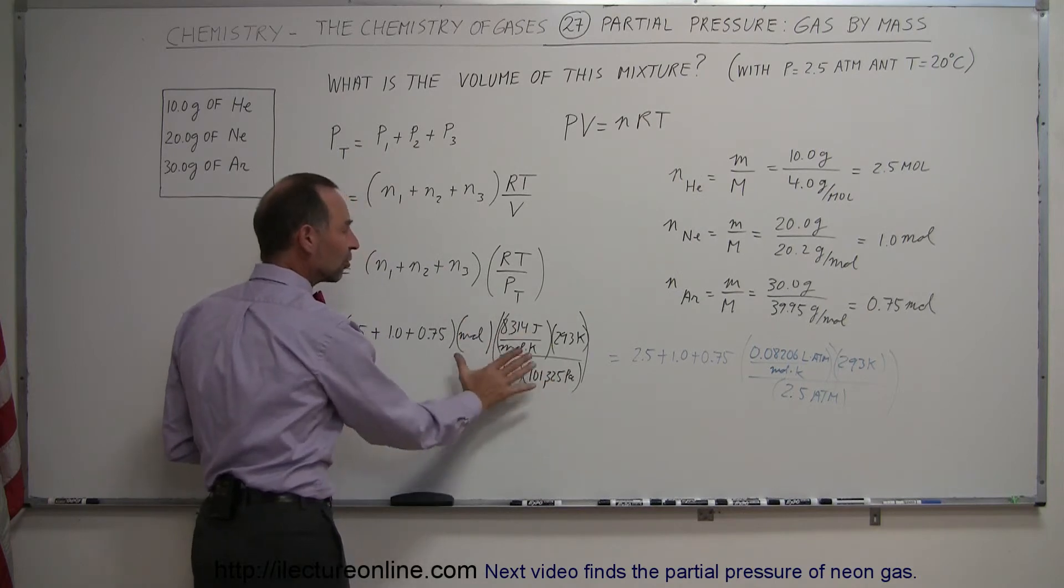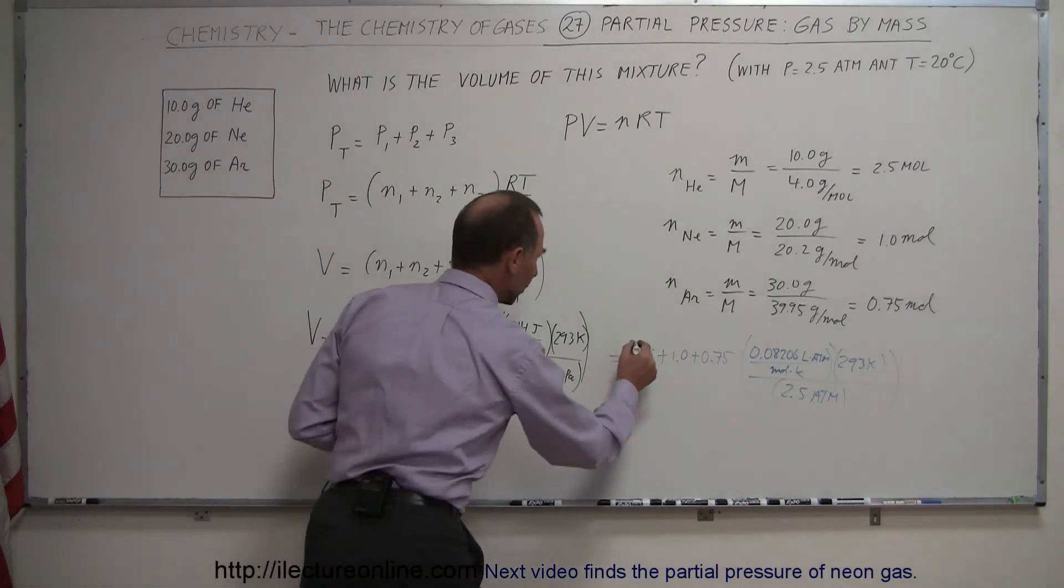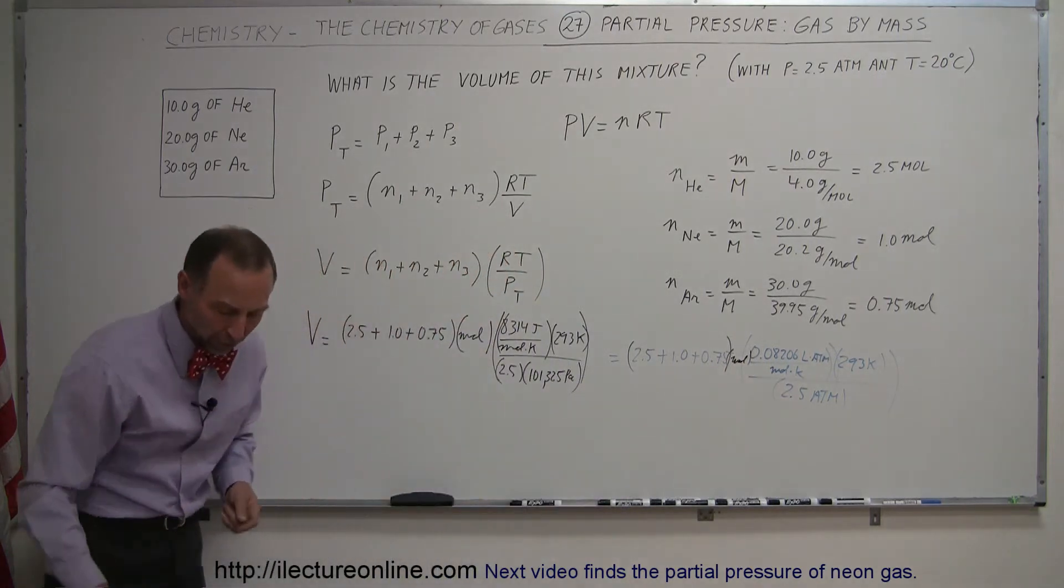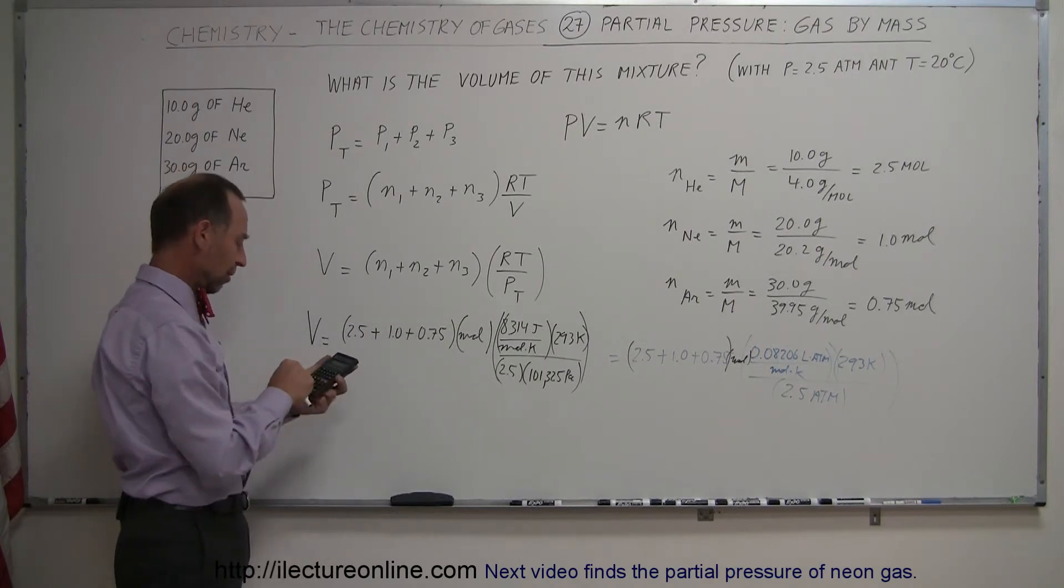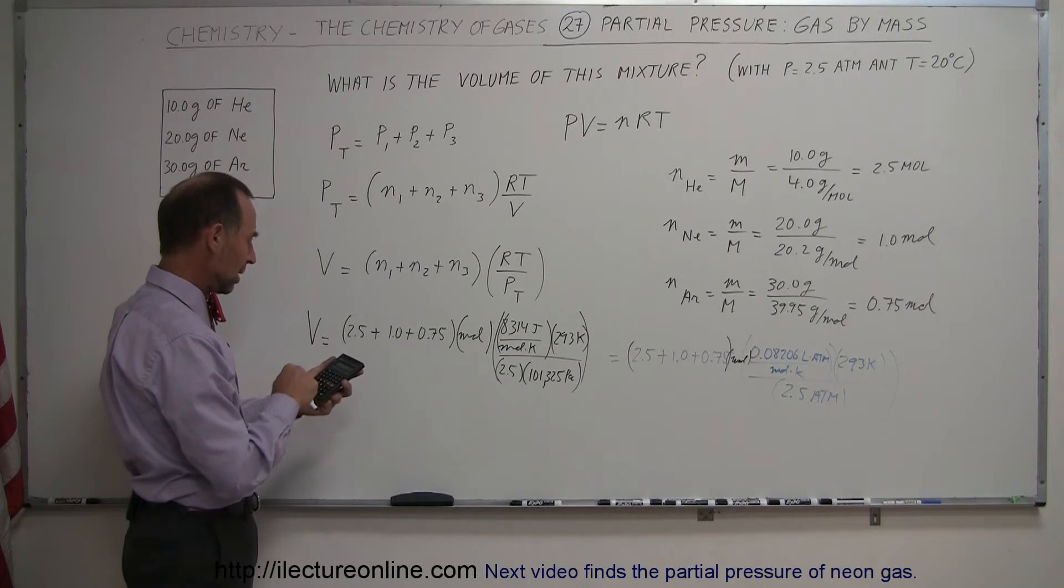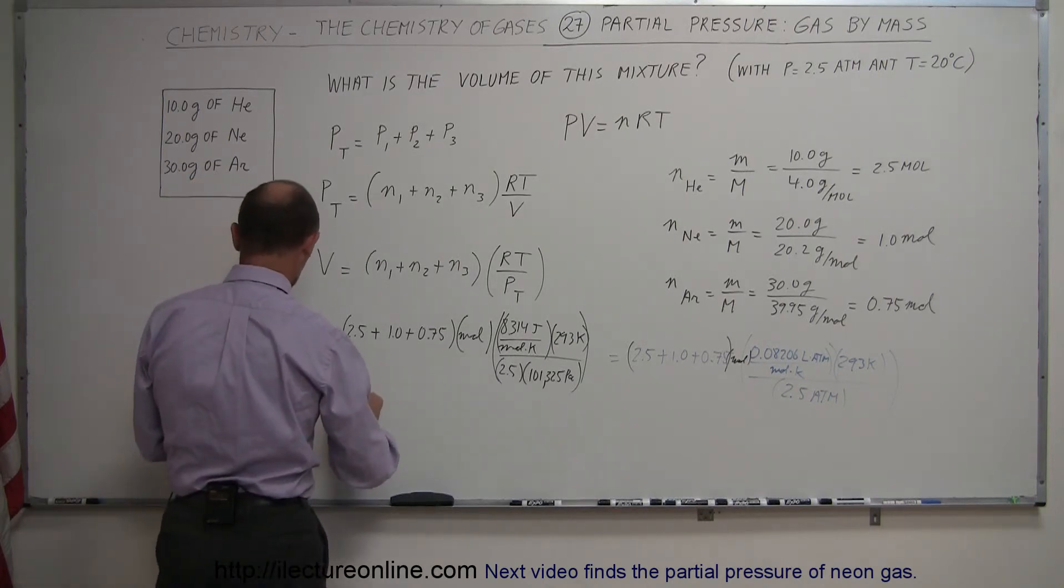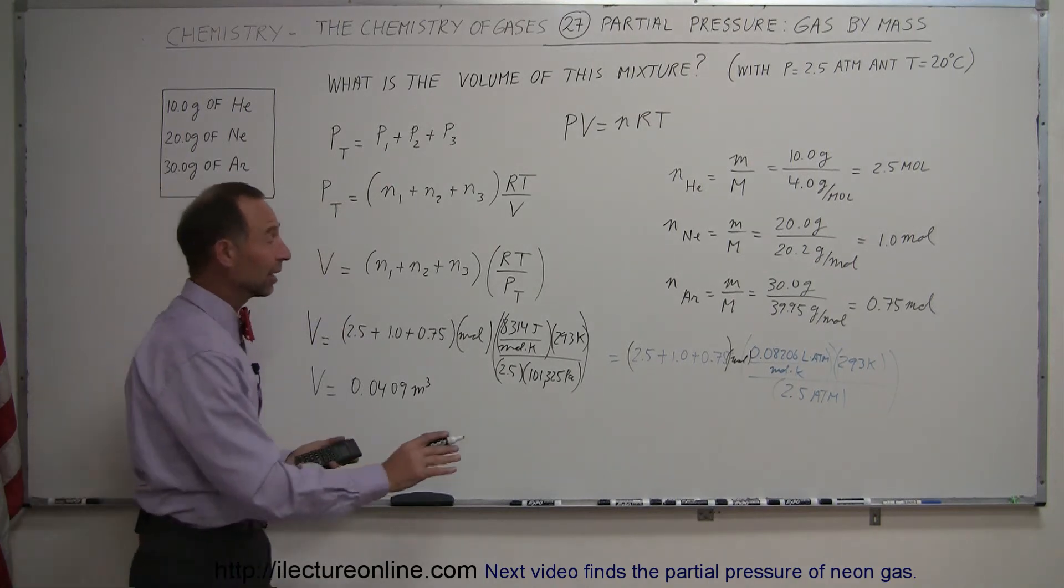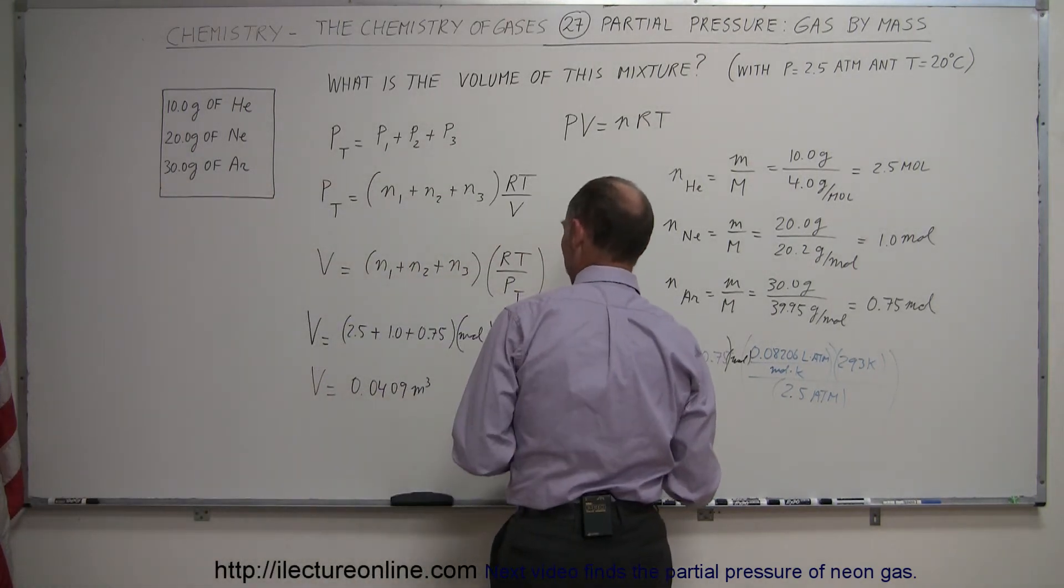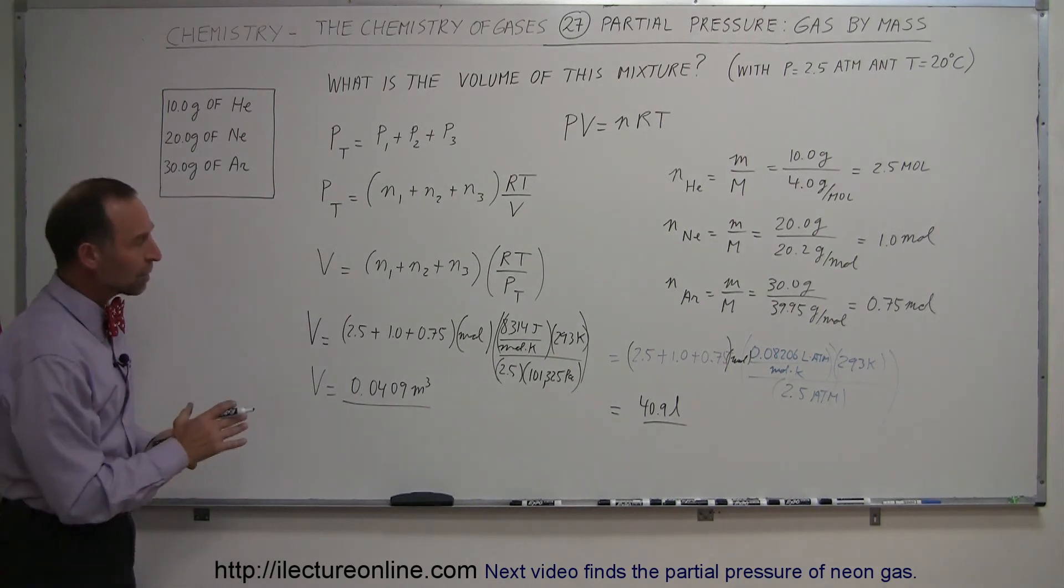Using this equation, we have 4.25 moles of the gas, times 8.314, times 293, divided by 2.5, and divided by 101,325. We get volume equals 0.0409 cubic meters. If we had done it like this, multiply by 1,000 would be 40.9 liters. Either way, you'll get the volume either in cubic meters or in liters.